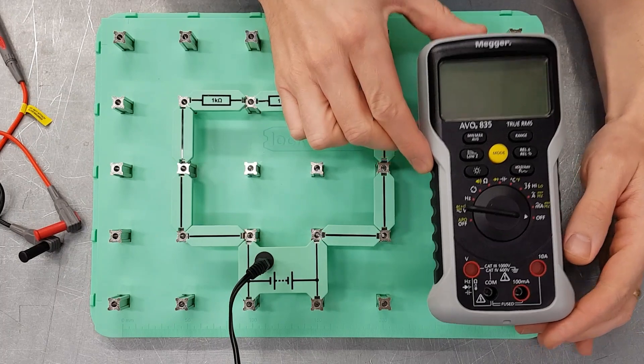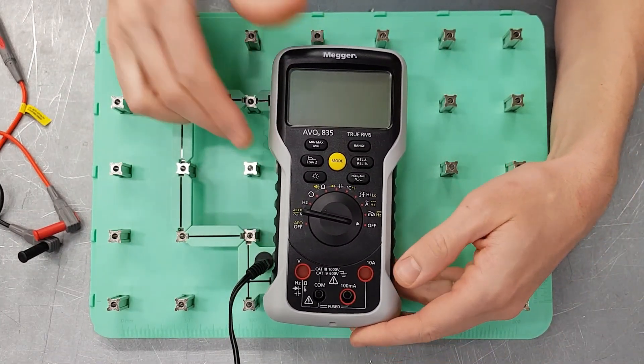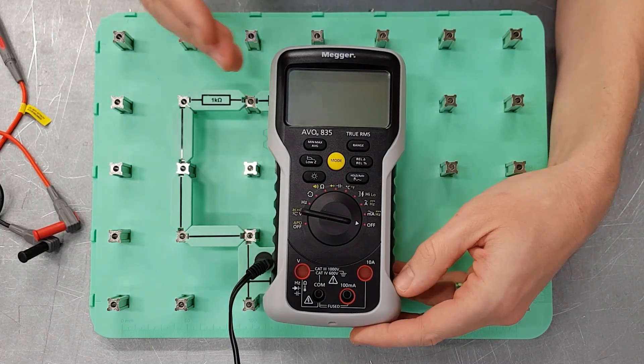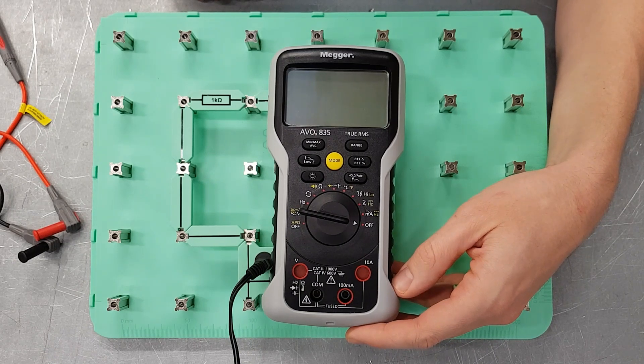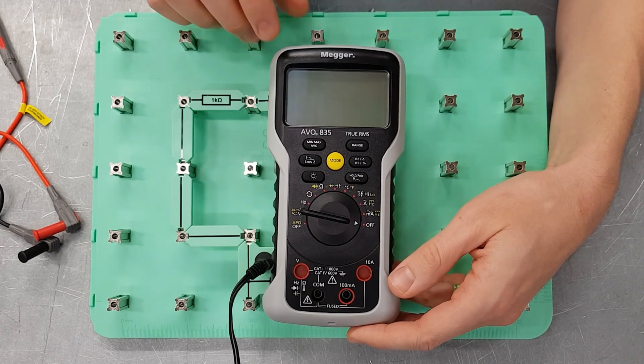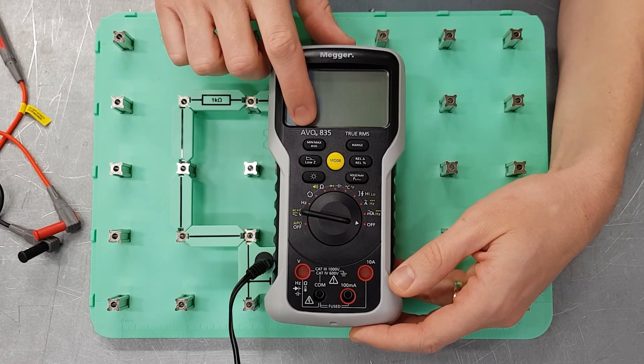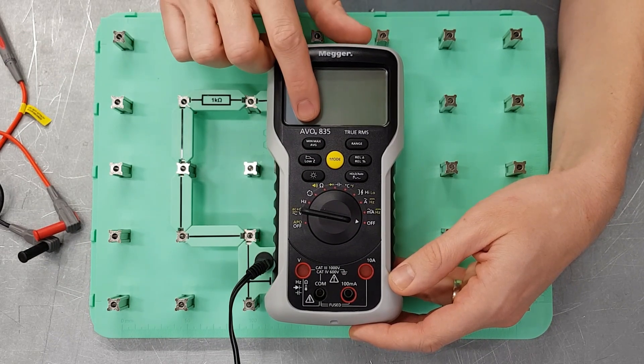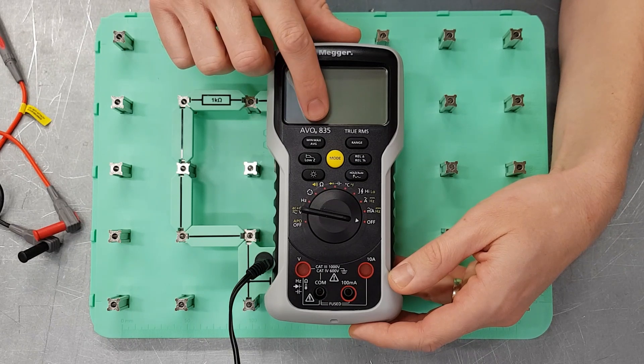So we have here our Mega Evo 835. This is a really nice top of the range multimeter. This has got an awful lot of functions on here and we're going to explore some of these as we go through. Some of the more mature viewers may remember the old Evo meters. These were very early meters that were manufactured and Evo stood for amps, volts and ohms.